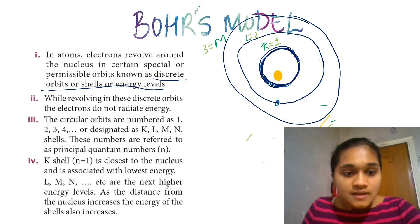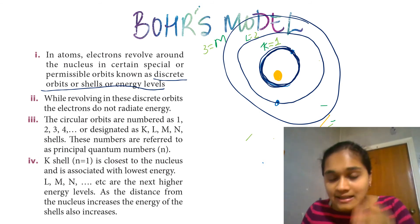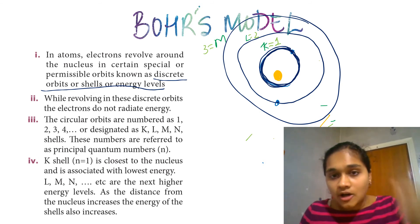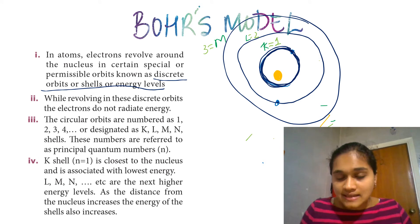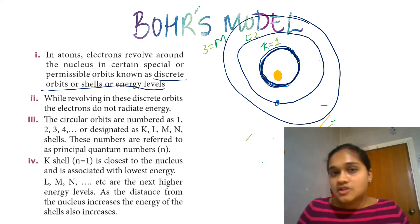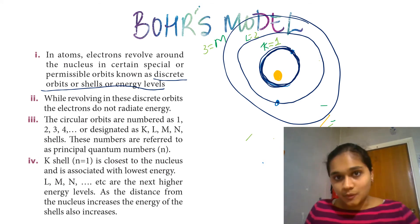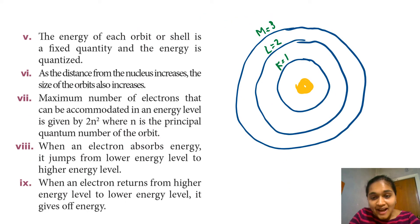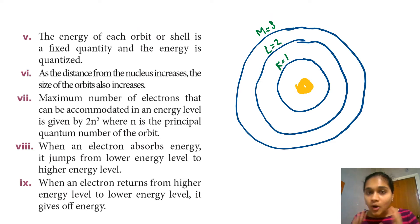If you look at the distance from the nucleus to the orbit, as the orbit is farther from the nucleus, it will have more energy. In a smaller orbit closer to the nucleus, the energy is less.